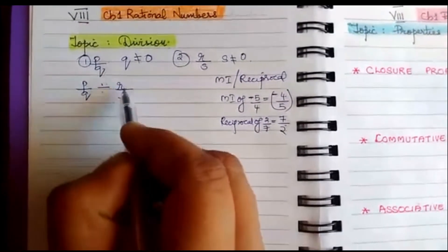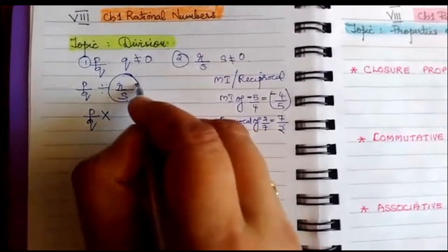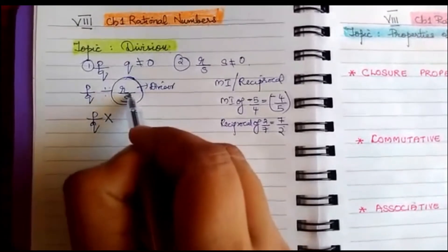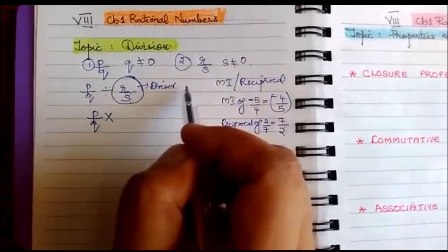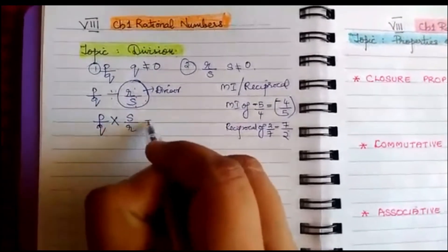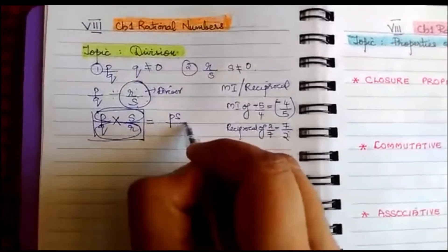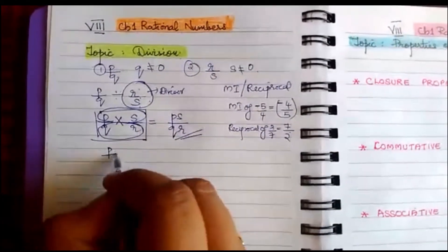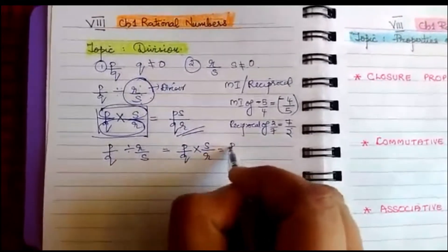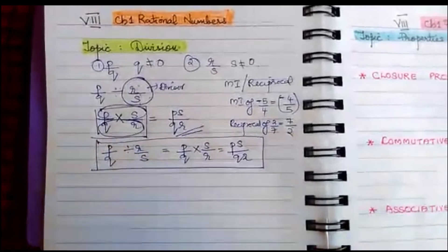So p/q divided by r/s is the same as p/q multiplied by the reciprocal of the divisor. The second number, r/s, is the divisor; the first number is the dividend; and the result is called the quotient. The reciprocal of r/s is s/r, so multiplying numerators and denominators gives ps/qr. Therefore: p/q ÷ r/s = p/q × s/r = ps/qr. This is very important, and we use multiplicative inverse or reciprocal here.